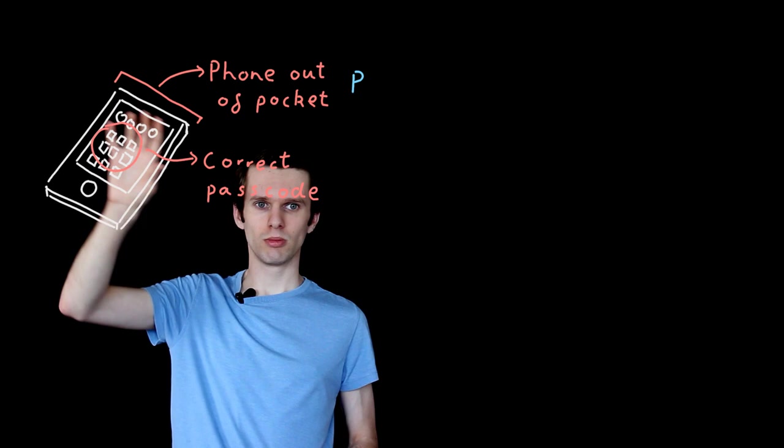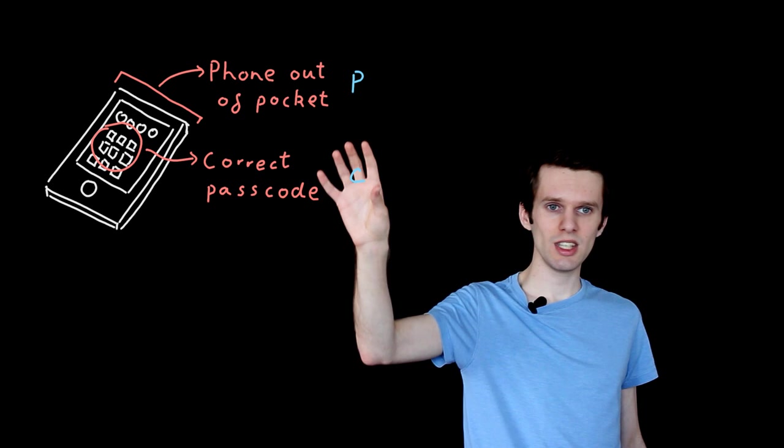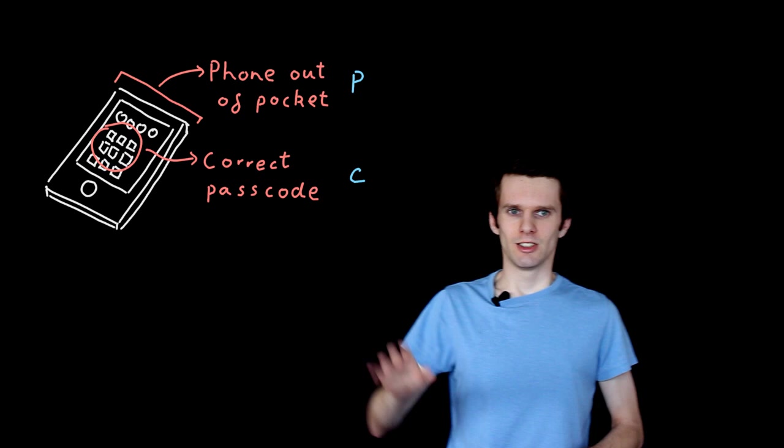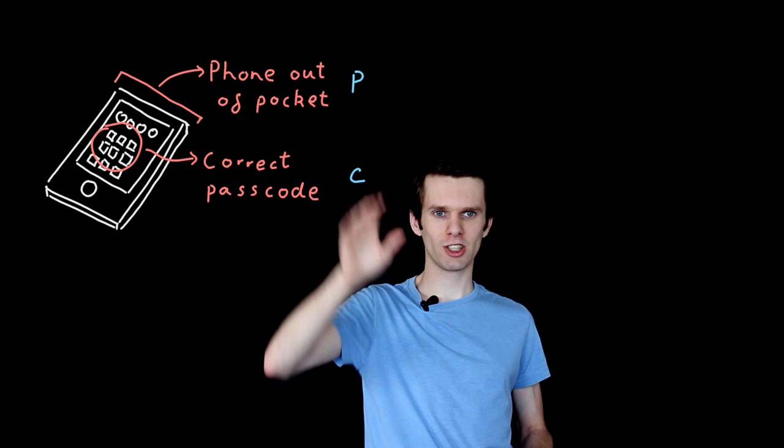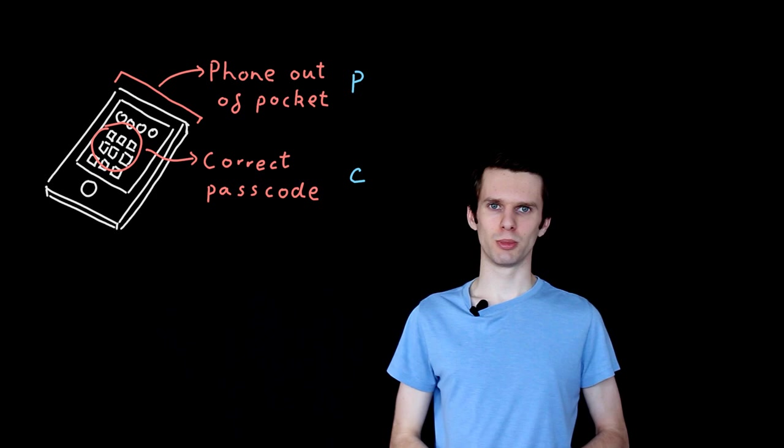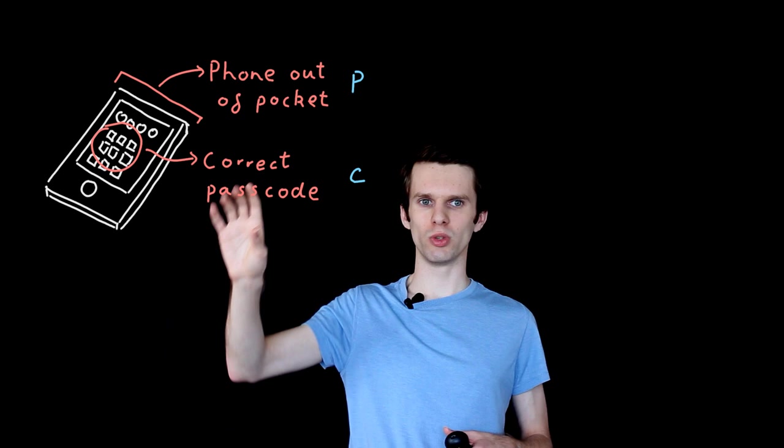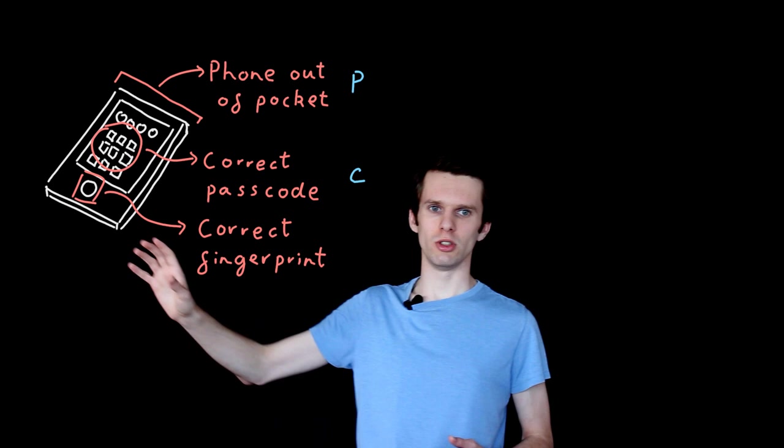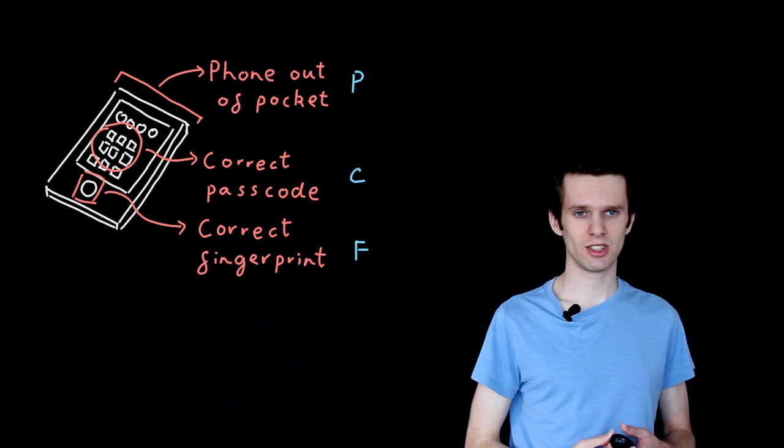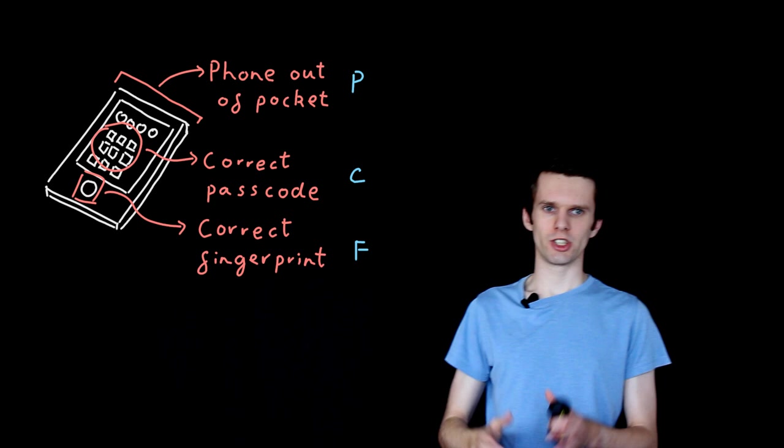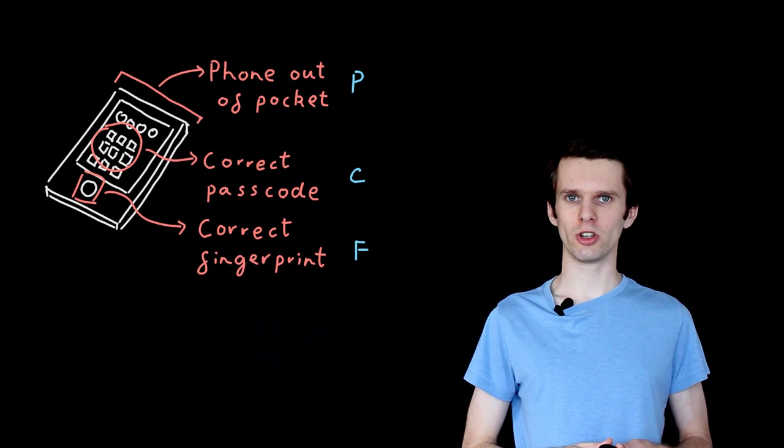Additionally, the user can enter their passcode into their phone. If they get it right, then we're going to call the symbol C true, and if they don't, it will be zero. We're playing a bit fast and loose here with the syntax. I've spent quite a long time emphasizing that the only symbols in propositional logic are P, Q, and R. We're now introducing this symbol C purely for convenience. We can more easily associate the symbol C with the word code. And finally, the user can also use their fingerprint to get into their phone, and we're going to call this the symbol F.